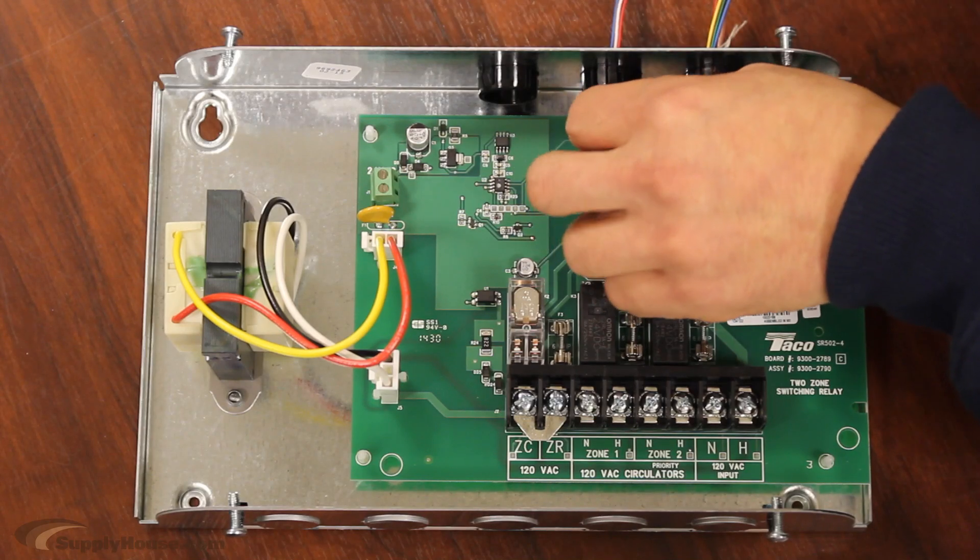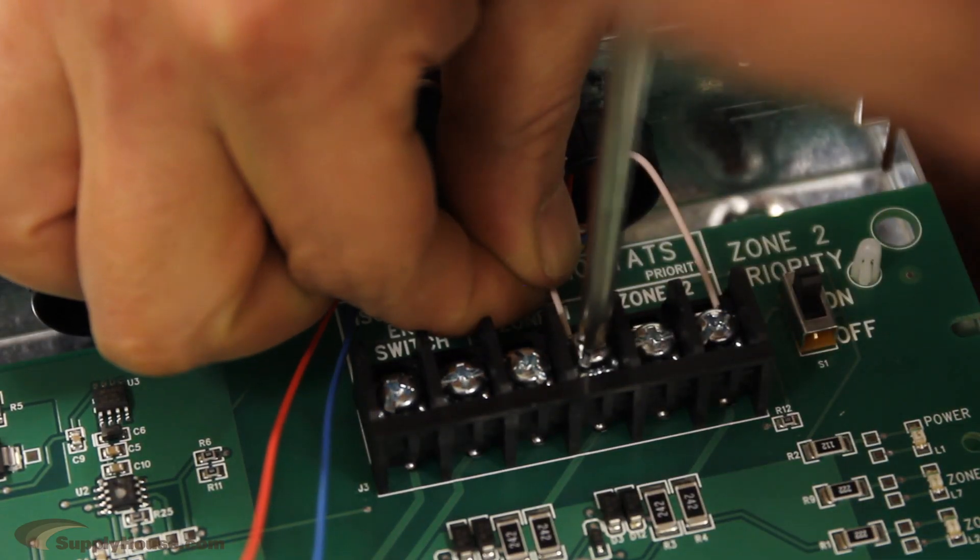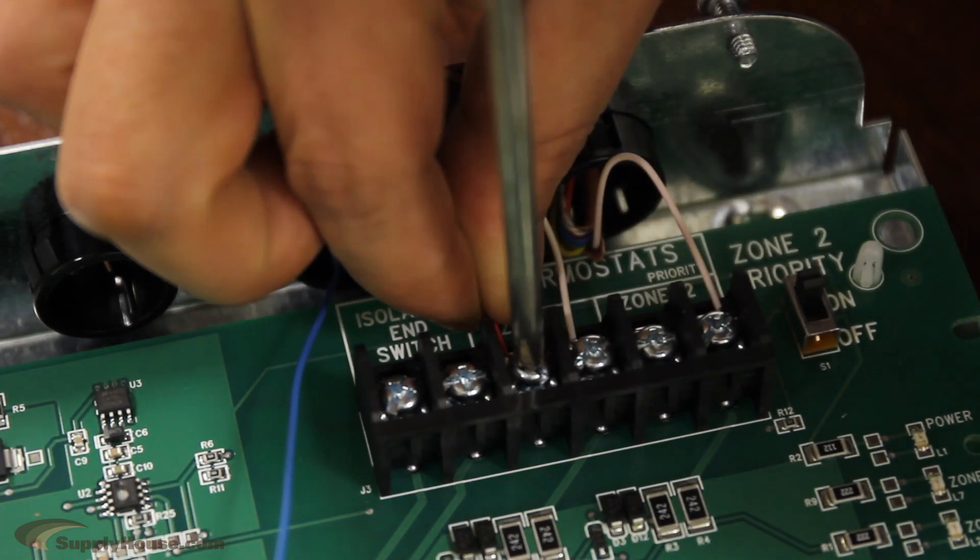For the first floor thermostat, we will use all three wires. First, connect the white wire to the W, the red wire to the R, and the blue wire to the common.